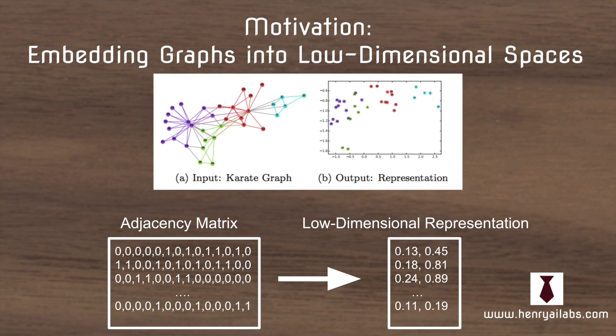These low-dimensional representations are also really useful for building supervised learning models that do tasks like link prediction and node classification.